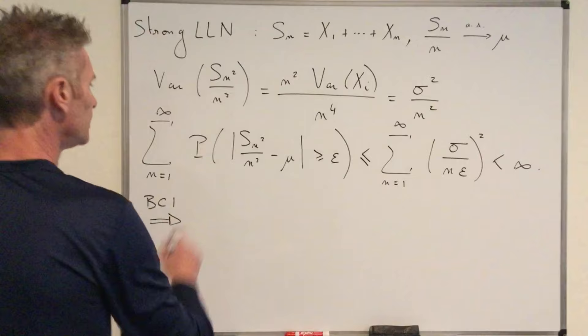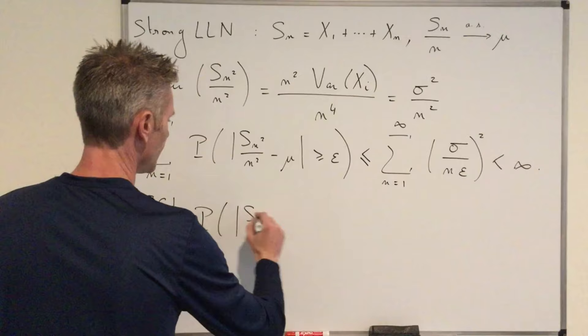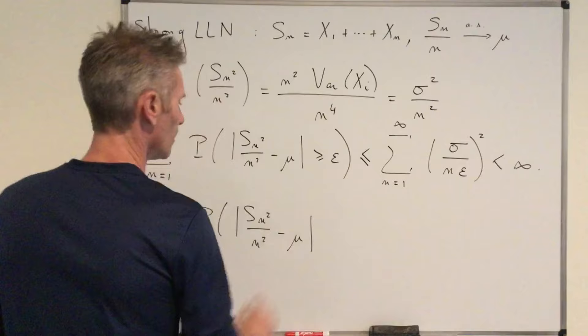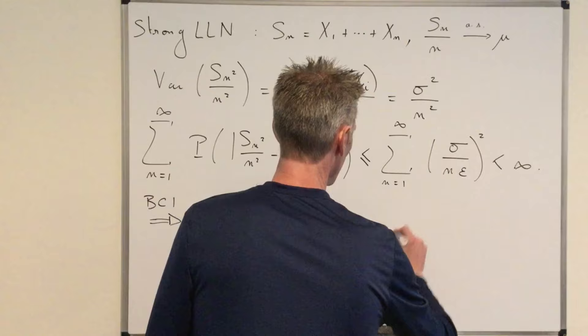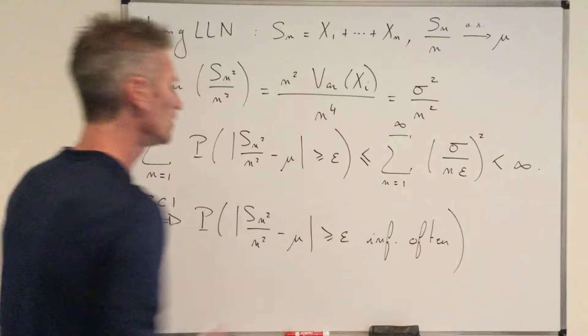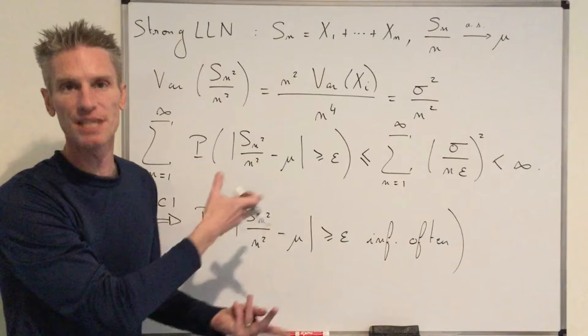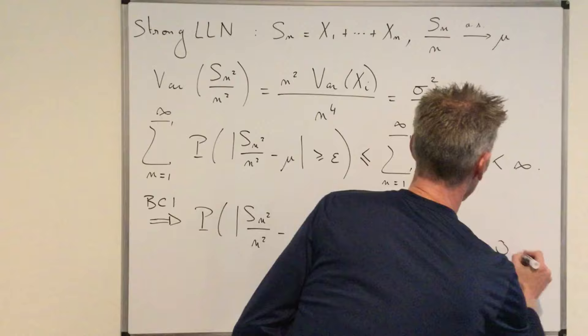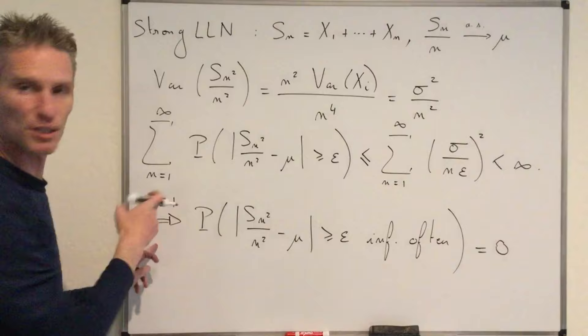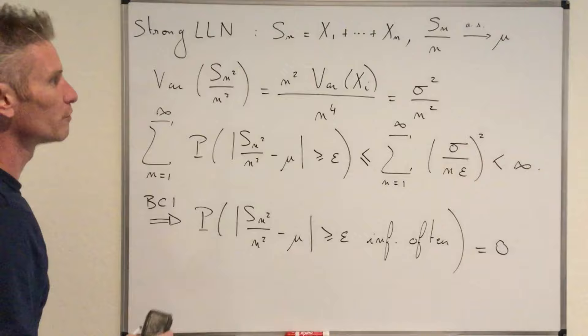From that, we can conclude that the probability that S_{n²}/n² minus mu is larger than epsilon infinitely often — meaning for infinitely many values of n — is equal to zero. That's a consequence of the fact that this sum is finite and the first Borel-Cantelli lemma.